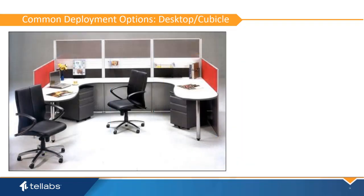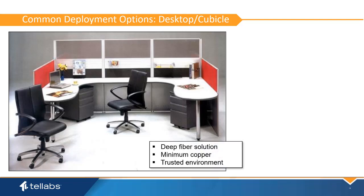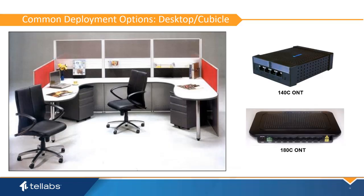A desktop or cubicle deployment installs the ONT within reach of the end user. The desktop cubicle deployment provides the deepest fiber installation with a minimum of copper. This deployment is typically in a trusted environment. The ONT-140C and 180C can be mounted using a bracket or conveniently mounted within industry standard raceway systems. Typical ONT placements are behind or above desk raceway covers, under the desk using a mounting bracket, within the lower raceway above the floor, and directly on the desktop.